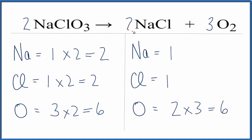So we'll just put a coefficient of two in front of the NaCl. One times two, that gives us two. And chlorines, one times the two, that'll give us two chlorines.